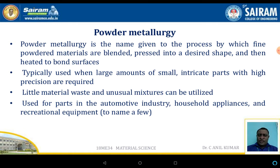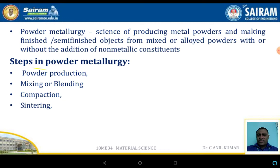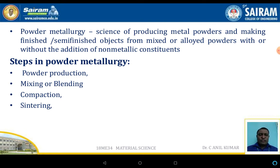Applications include the automotive industry, household appliances, and even the aerospace industry. Powder metallurgy science involves producing metal powder and making finished or semi-finished objects from mixed or alloyed powder, with or without non-metallic constituents. The steps involved are powder production, mixing or blending, compaction, and sintering.